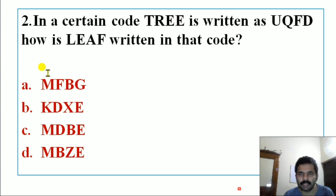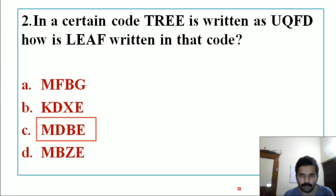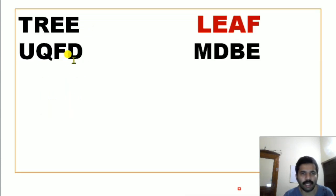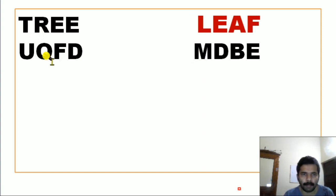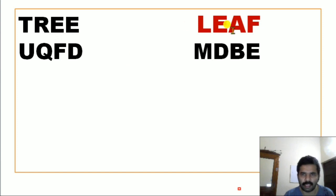Second question: In a certain code, TREE is written as UQFD. How is LEAF written in that code? The correct answer is MDBE. The logic: T→U (next letter), R→Q (previous letter), E→F (next letter), E→D (previous letter). Applying the same pattern to LEAF: L→M (next), E→D (previous), A→B (next), F→E (previous). So the correct answer is MDBE.